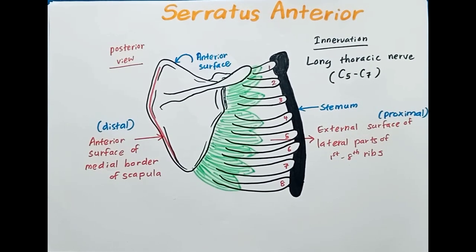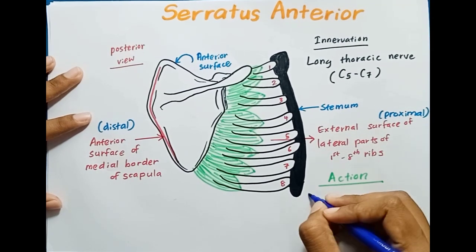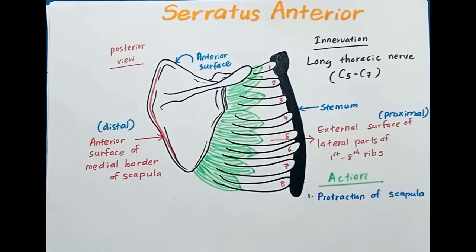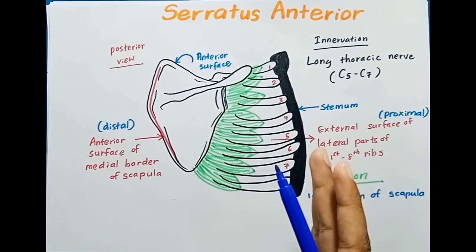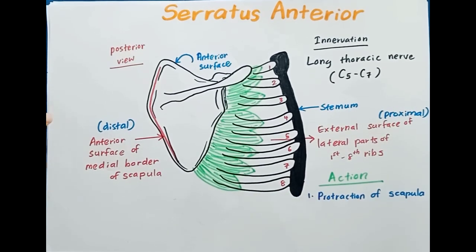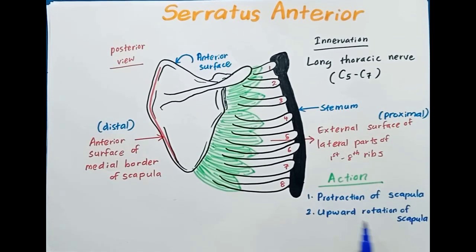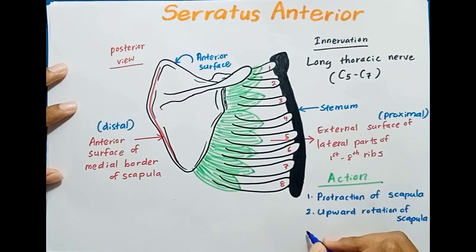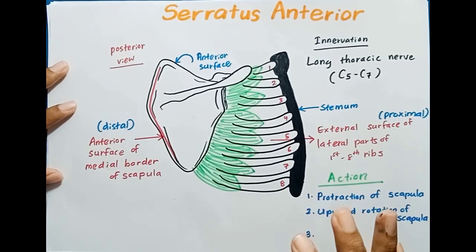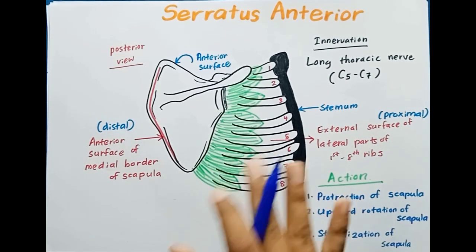Now let's talk about the actions of this muscle. The first action is protraction of the scapula — the serratus anterior pulls the scapula forward around the rib cage, which is essential for pushing movements and punching actions. The second action is upward rotation of the scapula, which allows the arm to be lifted above the head. The third action is stabilization of the scapula — by holding the scapula against the thoracic wall, it provides a stable base for movements of the arm and shoulder.